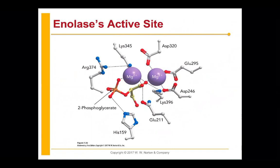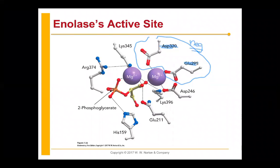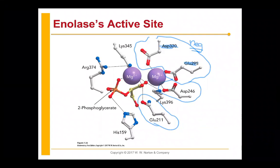How does this active site facilitate these interactions? We have negatively charged aspartate and glutamate residues — there's an aspartate here and a glutamate here. These are going to bind the positively charged metal ions. They're negative, so they're going to interact with those positively charged magnesium ions in order to stabilize the metal ions. Our substrate is this molecule right here — that's what we're going to act on.